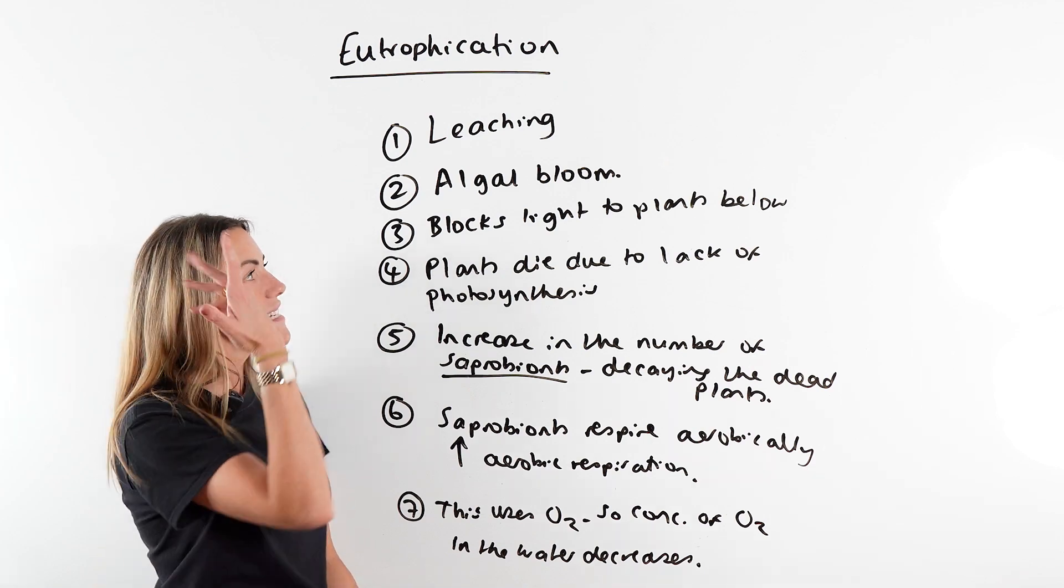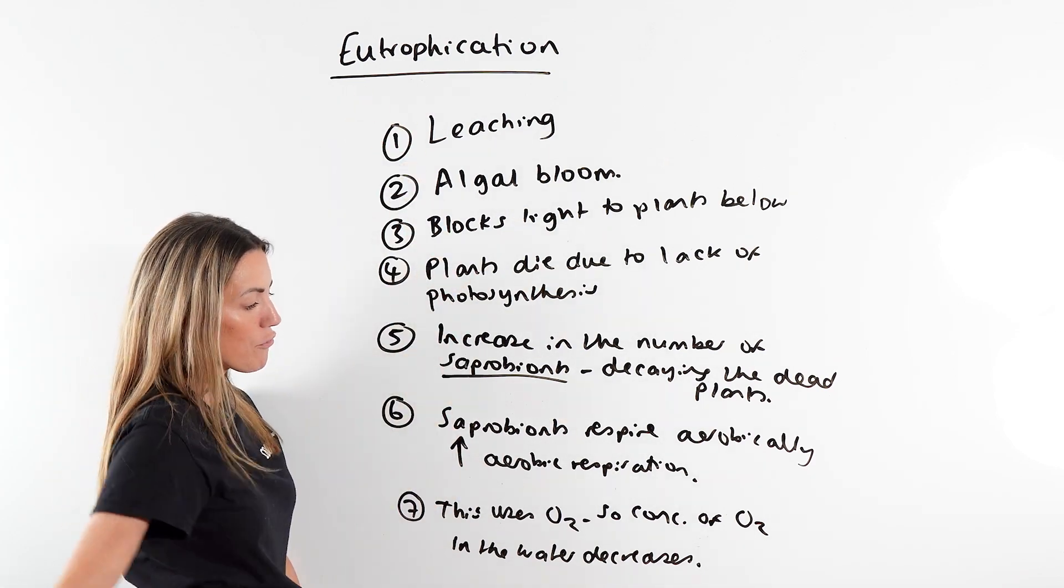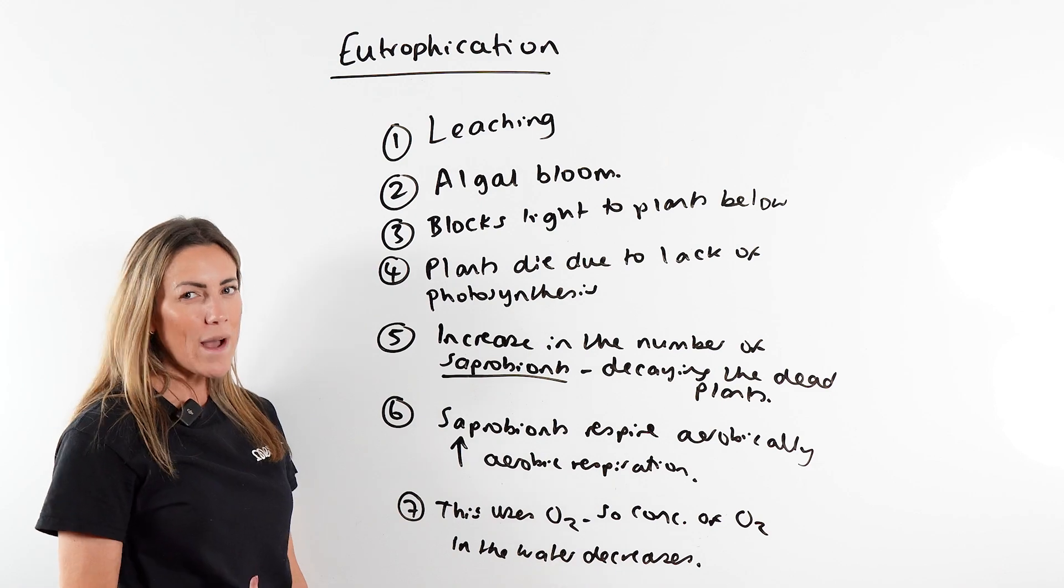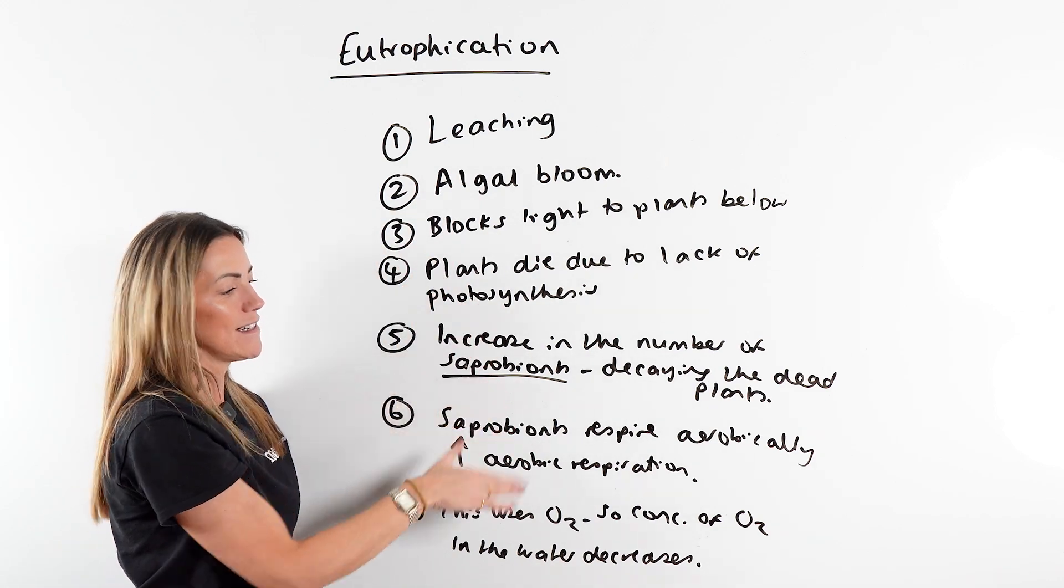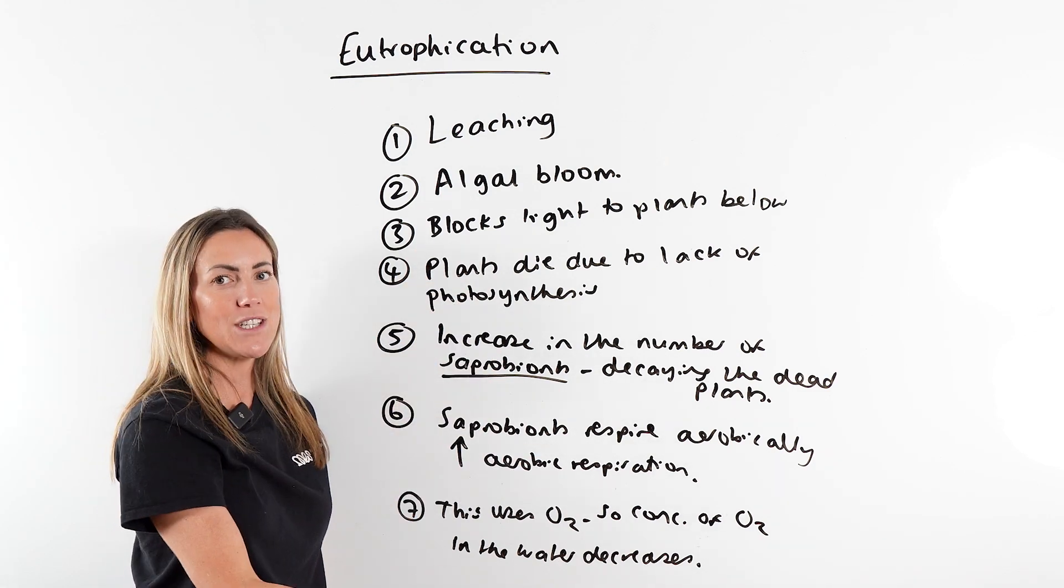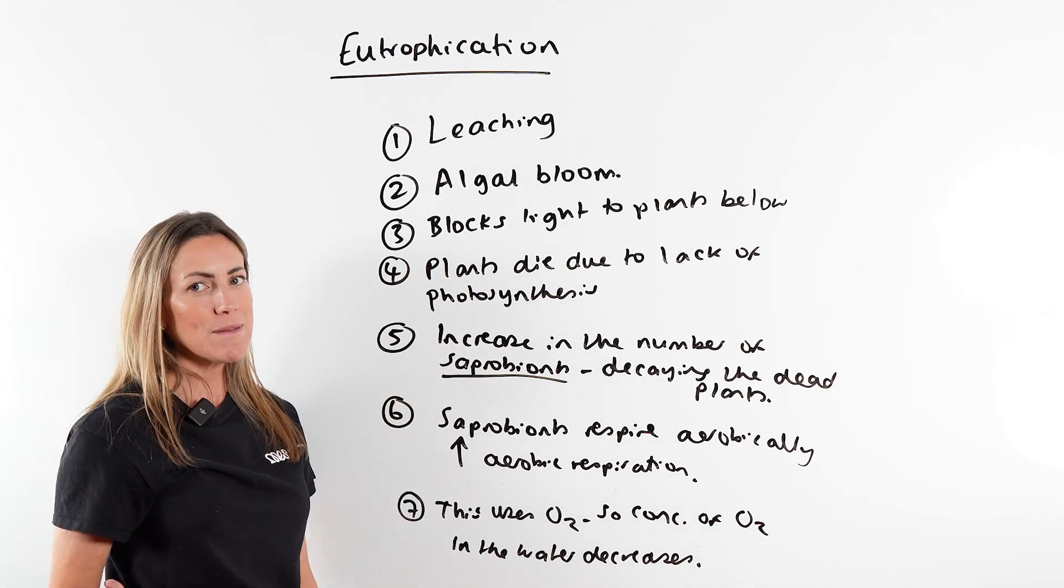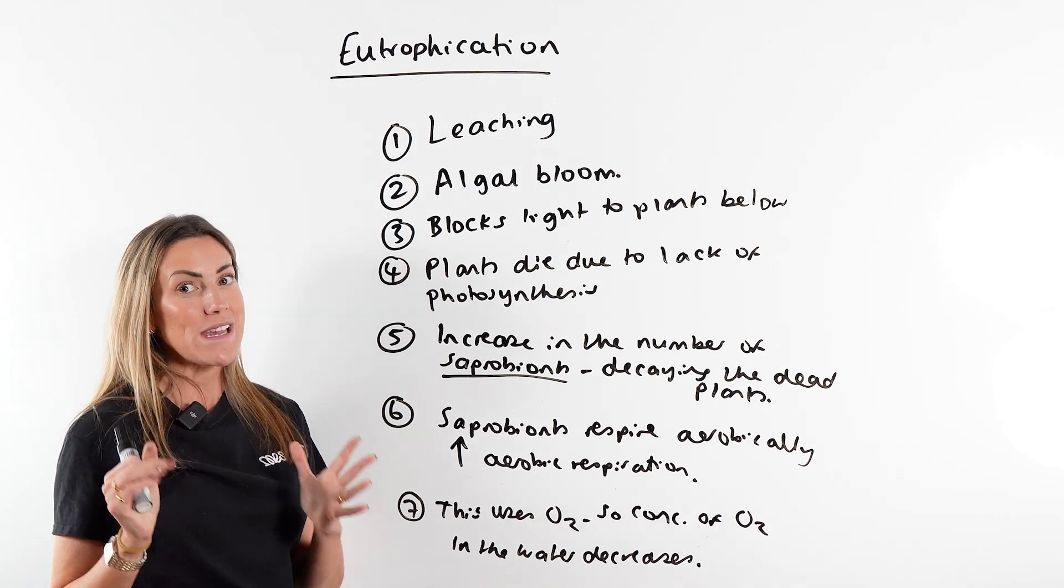And that's it. This is the story of eutrophication. Start with leaching, go through in this order. It's quite a nice one because as soon as you get algal bloom, the rest of it makes sense. It kind of acts as a cue, doesn't it? Each point kind of reminds you of what's going to happen next. Hope this video has been useful. Let me know if there's any other topics that you want me to cover.